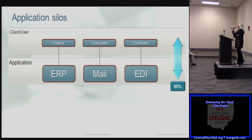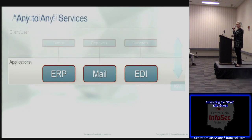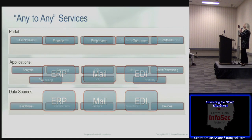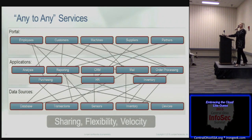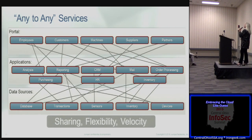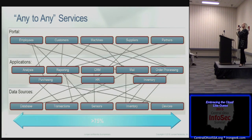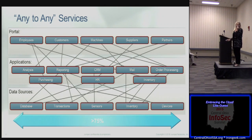In a typical data center, traffic started with application silos — primarily north-south. Then we evolved: separating out databases, getting better structured data. But then customers figure out they want to directly access your order management database, or HR realizes every employee could interact with their people management application. All of a sudden you've got any-to-any traffic. In today's typical data center and network, greater than 75% of your data is taking this east-west pattern, and the performance is not going to be what you want it to be.